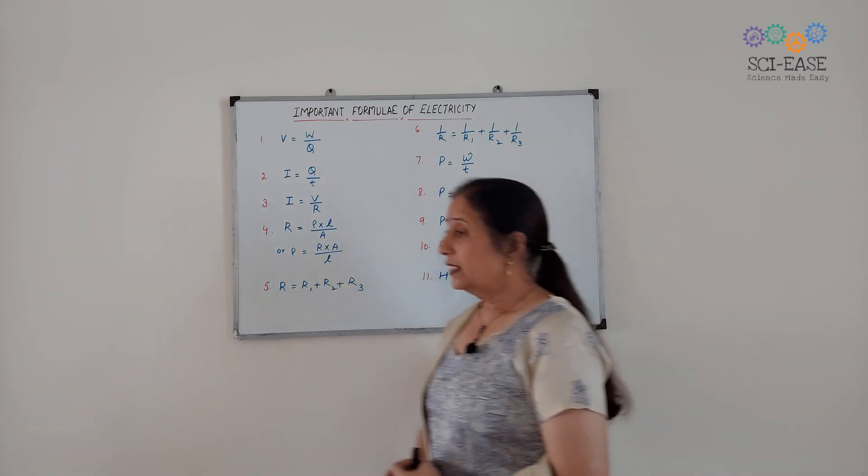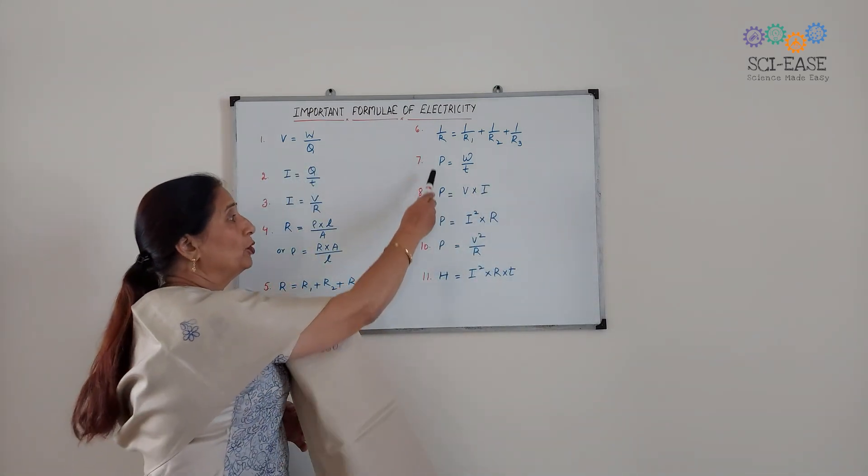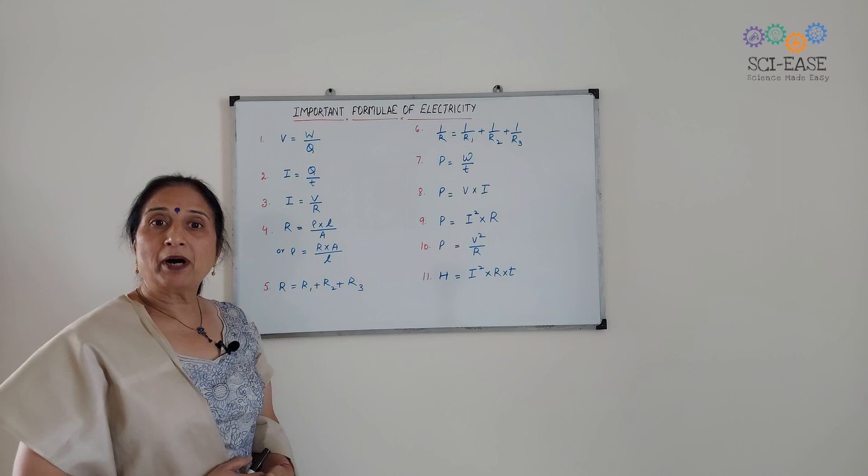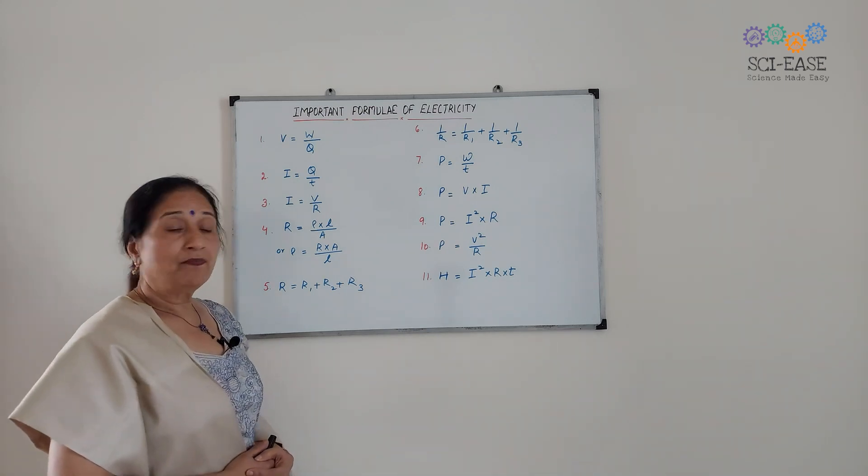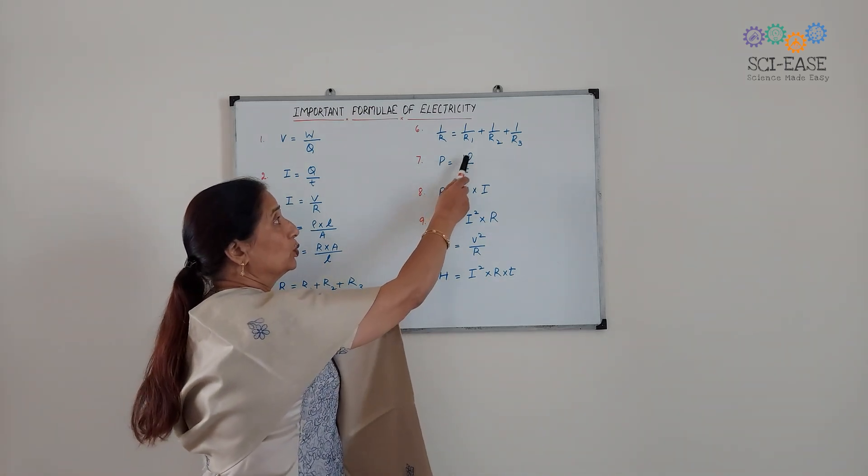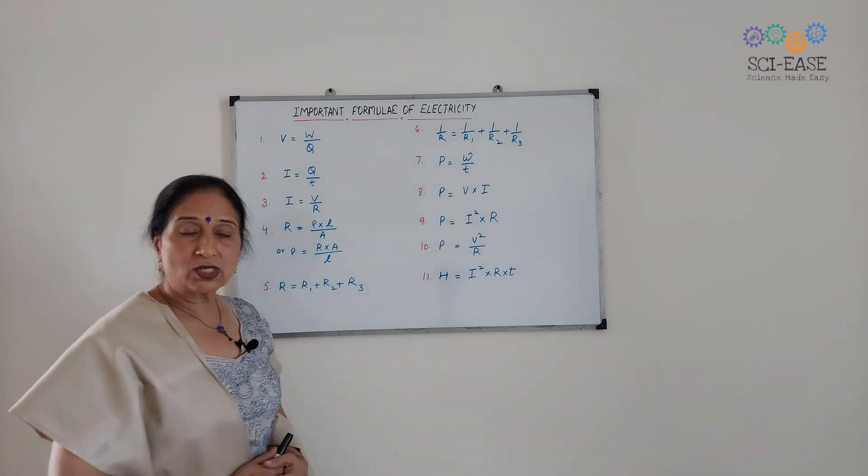Now here there are four formulas to calculate electric power. The first one: P equals W by T.